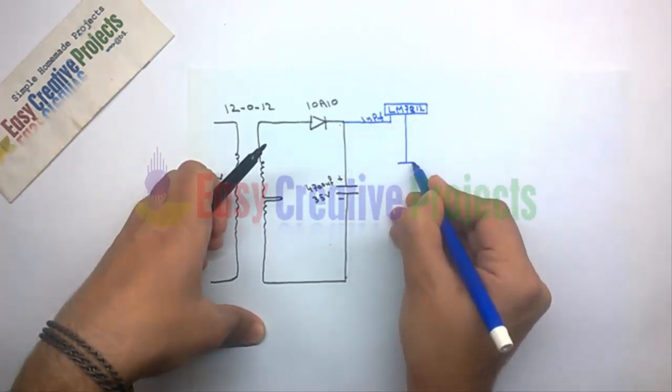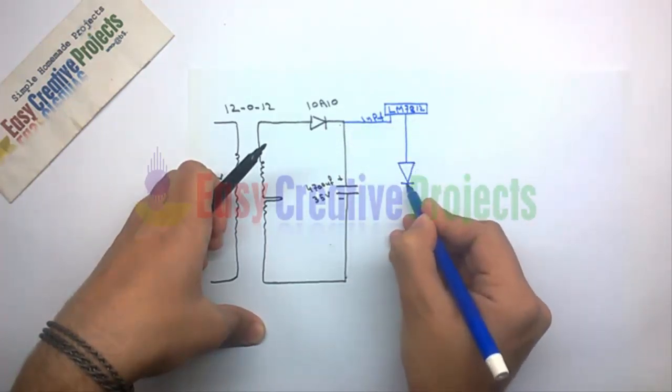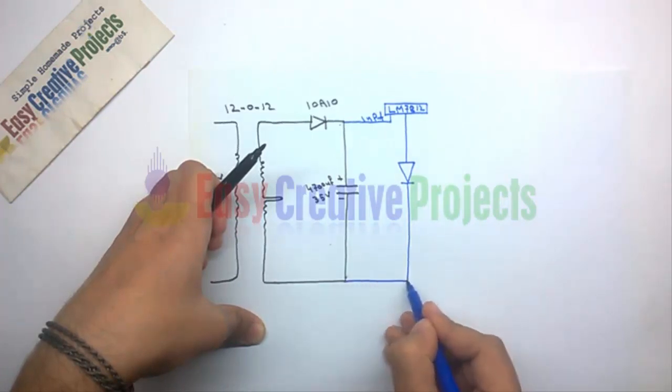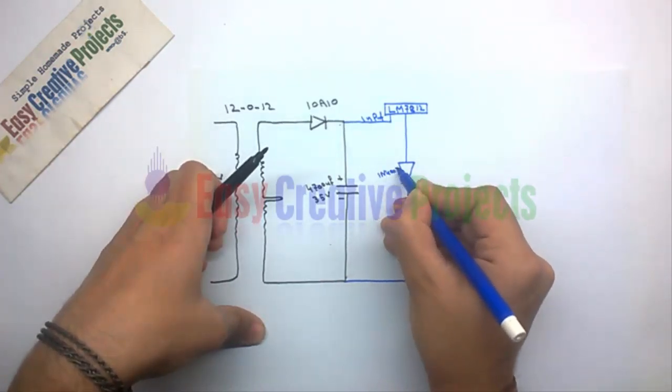Now 1N4007 diode connect with ground wire of voltage regulator like diagram.